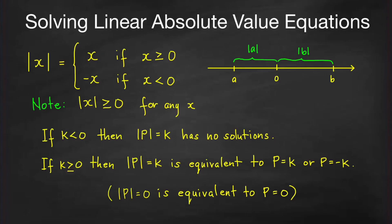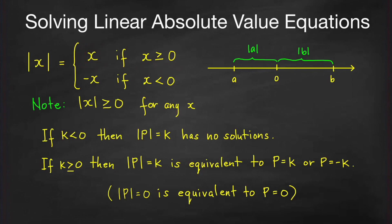In this video, we're going to solve linear absolute value equations. But before we solve some equations, let us first recall the definition of absolute value. The absolute value of a number x is equal to the number inside the absolute value bars if x is greater than or equal to 0, and it's equal to the negative of the number inside if the number is less than 0.